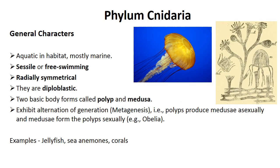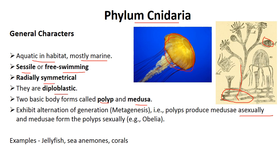Now phylum Coelenterata. They are almost aquatic, mostly marine, and have two phases of life: one is the sessile phase (polyp) and one is the free-swimming phase (medusa). Polyp is attached to the substratum and reproduces asexually to produce medusa. Medusa is totally free-swimming. They are radially symmetrical and also diploblastic. They have metagenesis — asexual reproduction in polyp phase and sexual reproduction in medusa phase. Examples: Obelia, Aurelia, jellyfish, sea anemone, and coral.